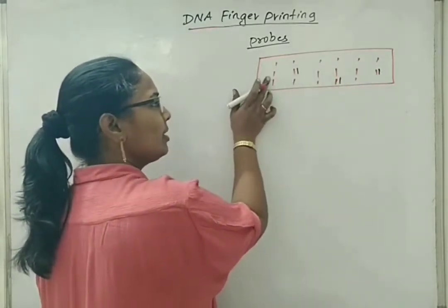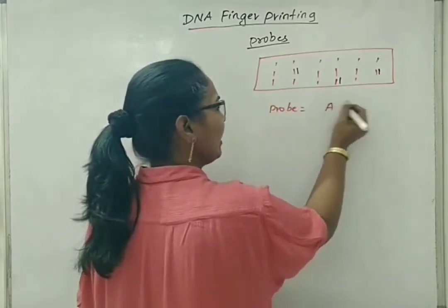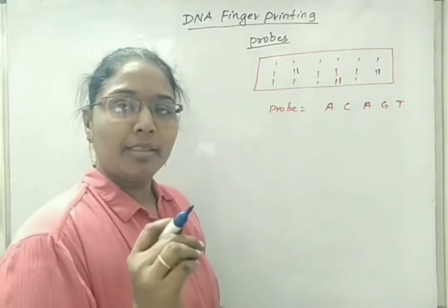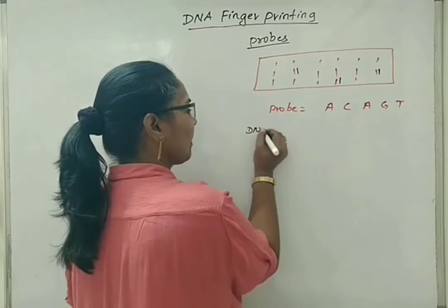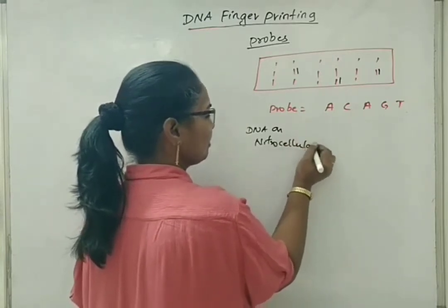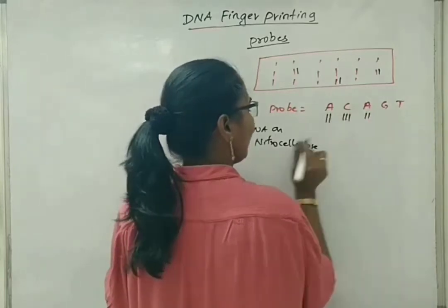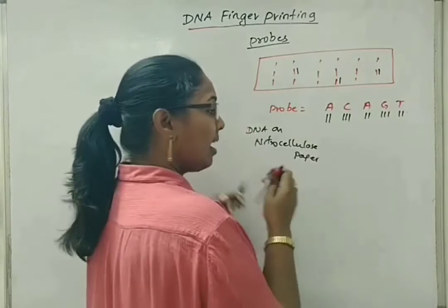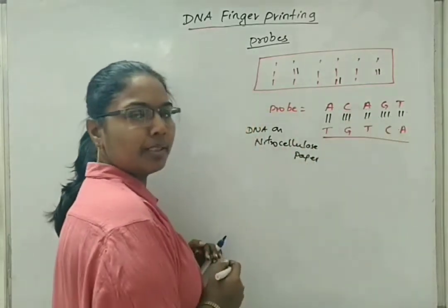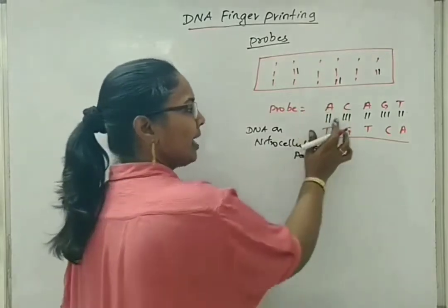For example, if a probe has the sequence adenine-cytosine-adenine-guanine-thymine — a known sequence already prepared in the lab — and the smaller DNA from gel electrophoresis is stuck onto the nitrocellulose paper with unknown gene sequences, if the probe forms bonds with the unknown DNA, it means that DNA must compulsorily have the complementary sequence: thymine-guanine-thymine-cytosine-adenine. The probe binding to an unknown DNA fragment means there is complementarity through hydrogen bonds.